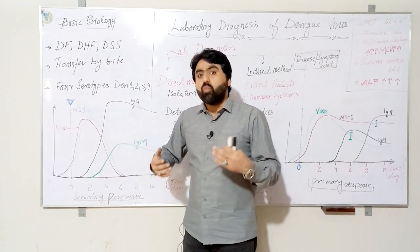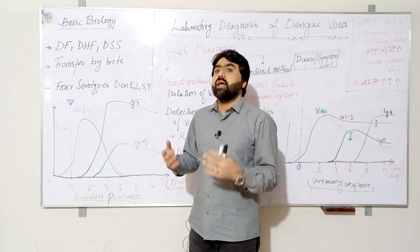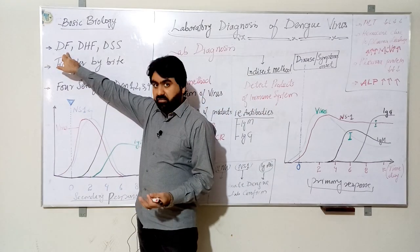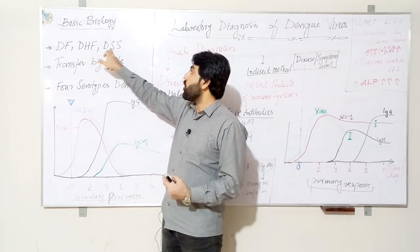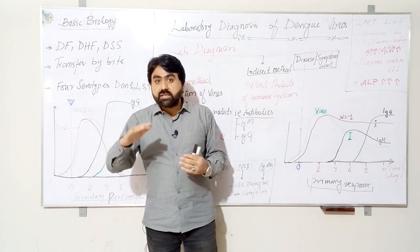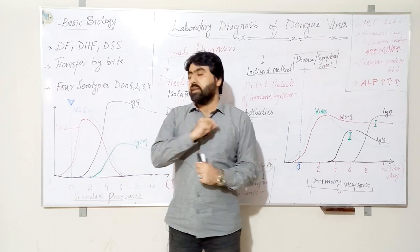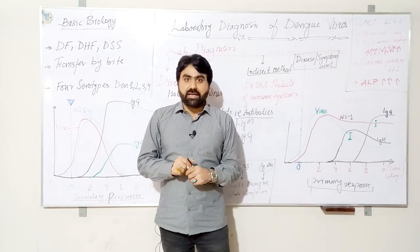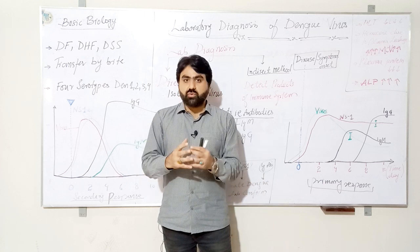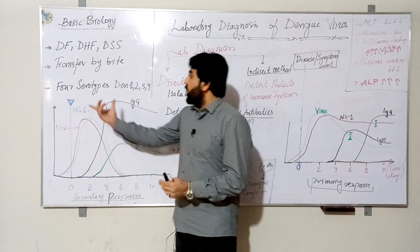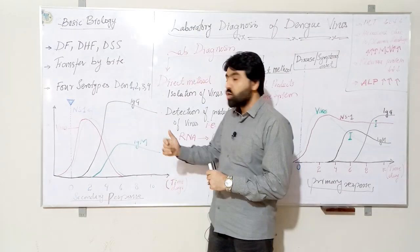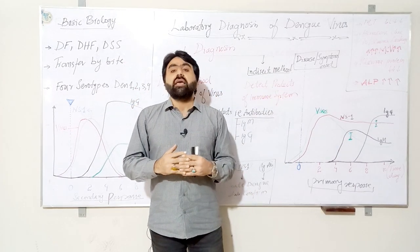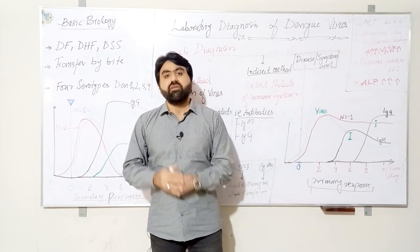Dengue virus is a flavivirus that contains RNA as its genome. It can infect human beings, and the clinical manifestations range from asymptomatic infection to dengue fever or the more severe dengue shock syndrome. Dengue virus is transmitted by the bites of Aedes aegypti or Aedes albopictus mosquitoes. There are four serotypes of dengue virus: DEN-1, DEN-2, DEN-3, and DEN-4, all of which can cause dengue fever.